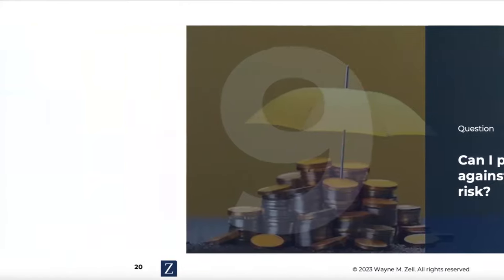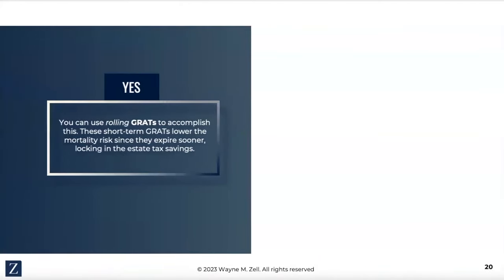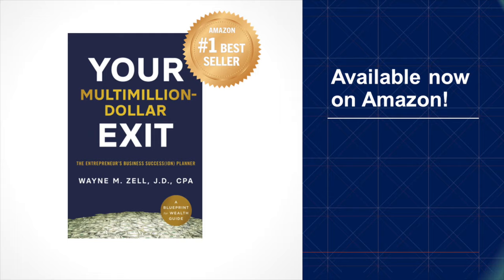How do I protect against mortality risk? We use rolling GRATs to accomplish this purpose. In connection with zeroed-out GRATs, these short-term GRATs lower mortality risk because they expire in a very short period of time, and they can lock in the estate tax savings for the appreciation during that short term. I've written about this in my book, Your Multi-Million Dollar Exit — check out the book at pages 169 and 170.